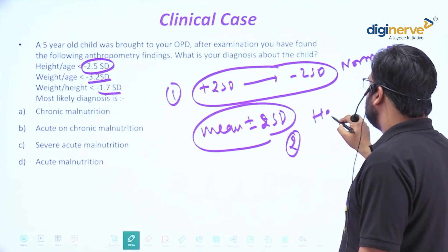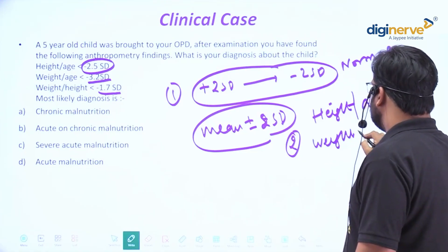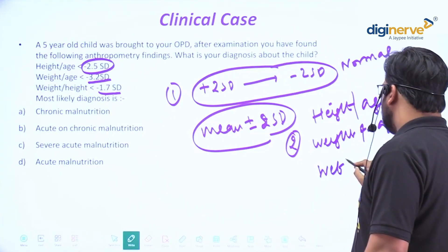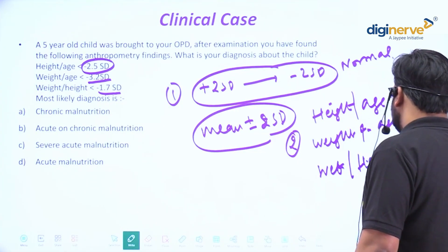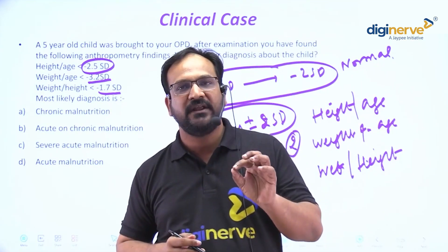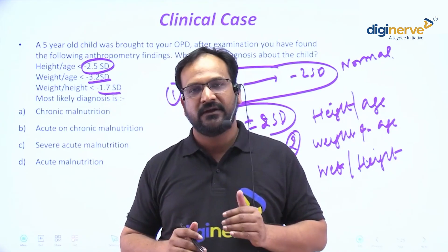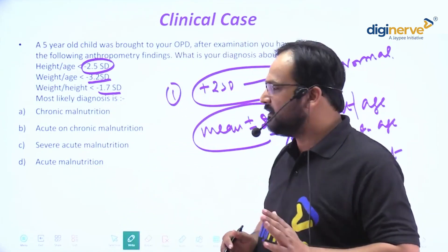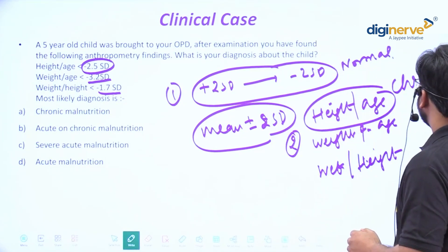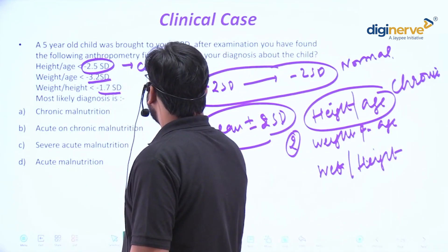The second thing is they have given three indicators: height-for-age, weight-for-age, and weight-for-height. You must remember that height-for-age will always be a chronic malnutrition indicator, because you cannot reduce height in an acute condition. Height will always be a chronic criteria.